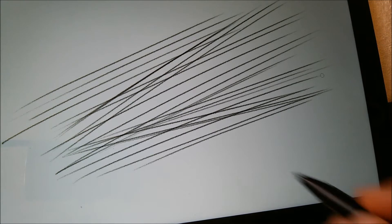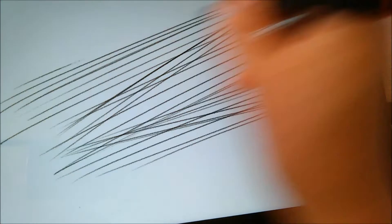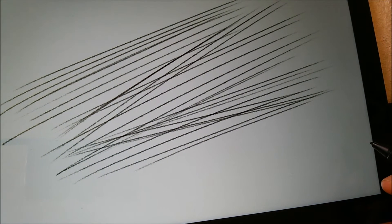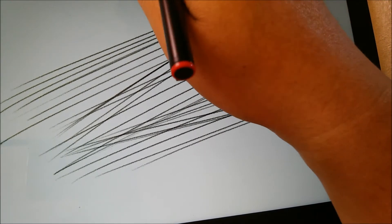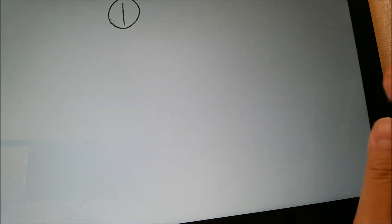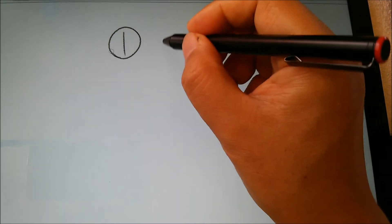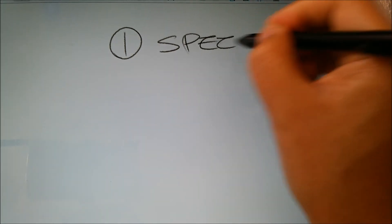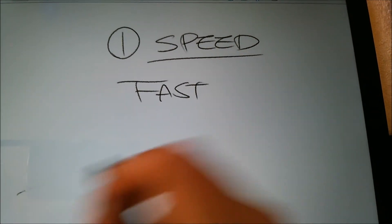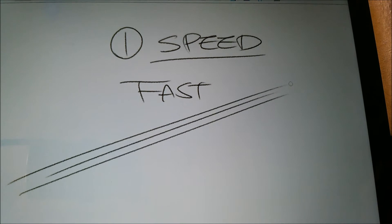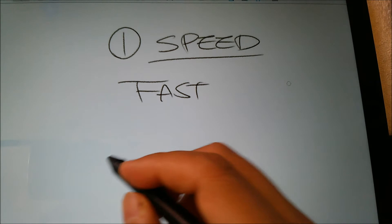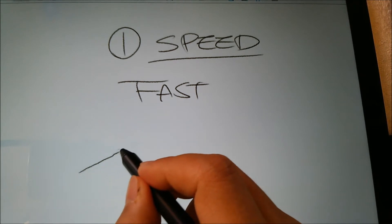Instead of suffering through all that, there are some really simple tips that you can remember in trying to accomplish a straight line, whether it's on paper or on a digital canvas like this one. Number one tip is speed. You gotta go fast. Speed is key to straight lines.